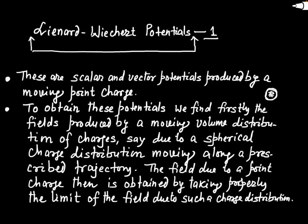In the previous lecture, we covered the concept of retarded potentials. Now, on the basis of retarded potentials, we will develop the concept of Liénard-Wiechert potential. This Liénard-Wiechert potential is just a special case of the general retarded potential. Since this concept is also very vast, I will divide this into two lectures. This is the first part, where we will first understand what the Liénard-Wiechert potential is and then find its actual expression.